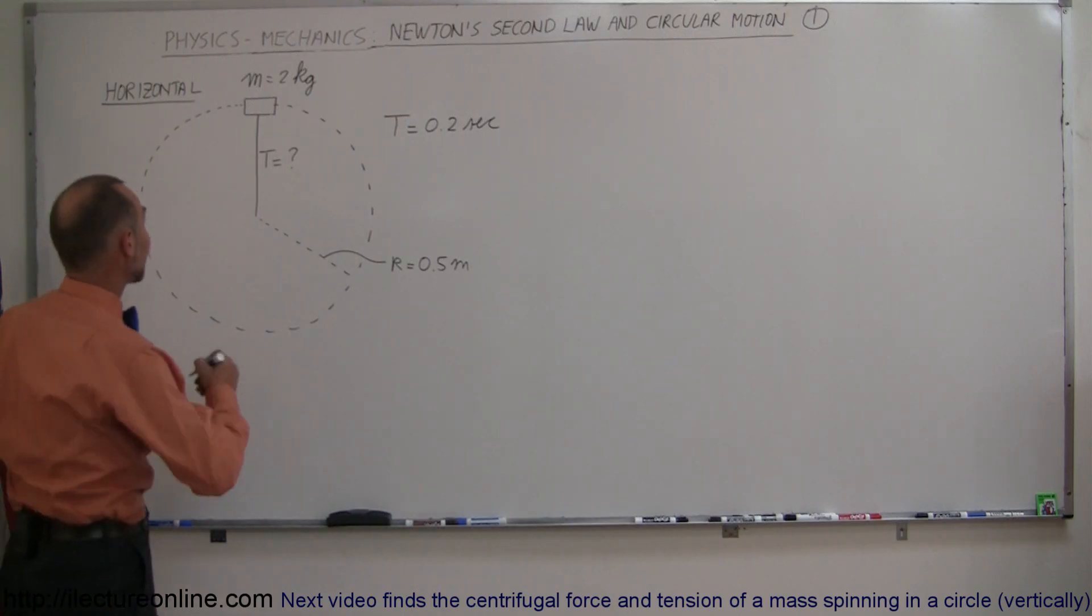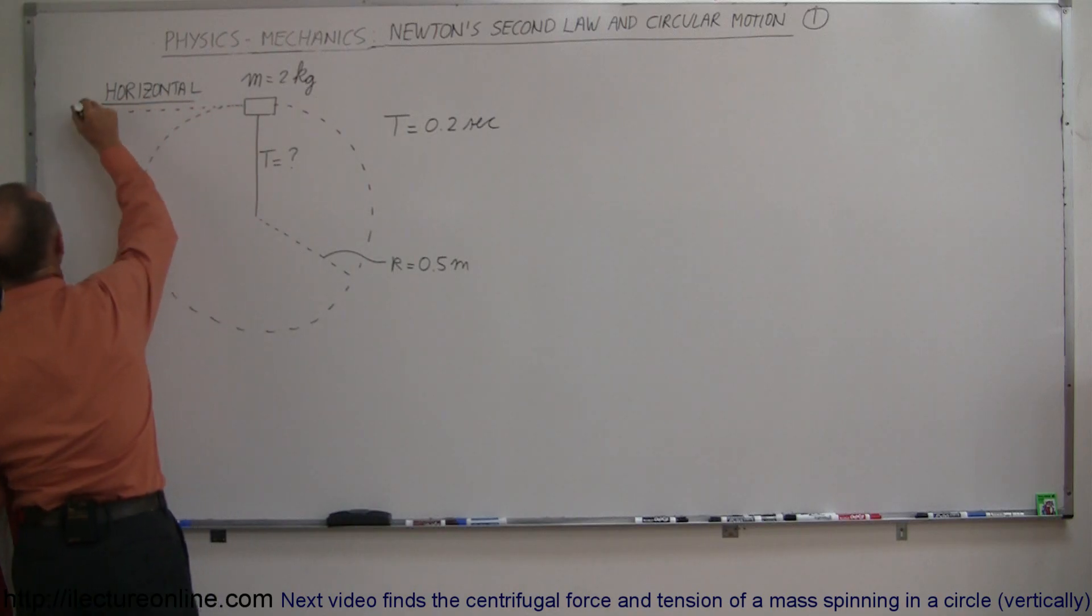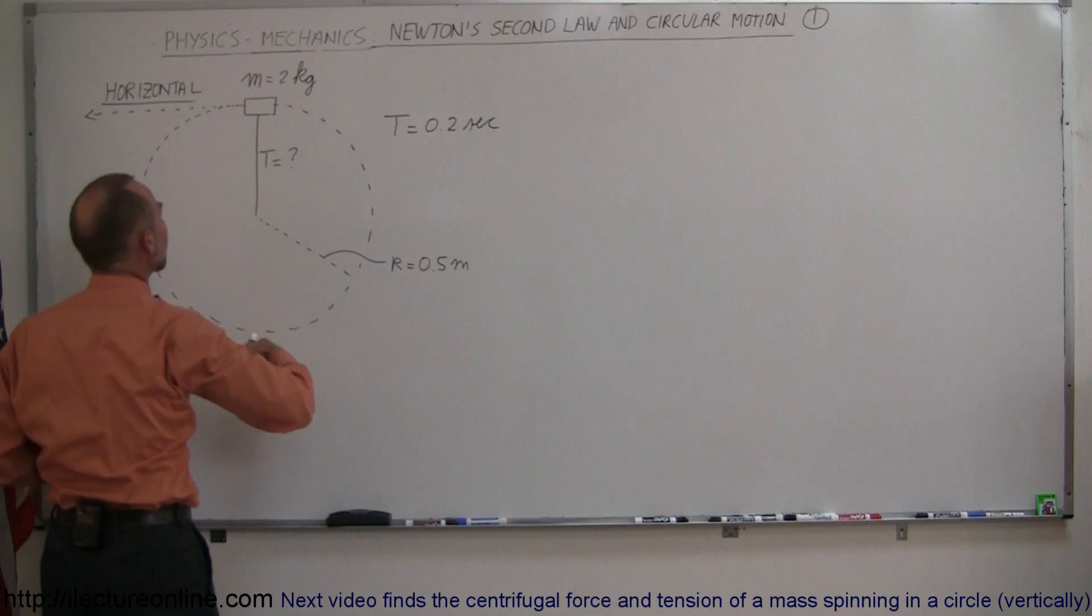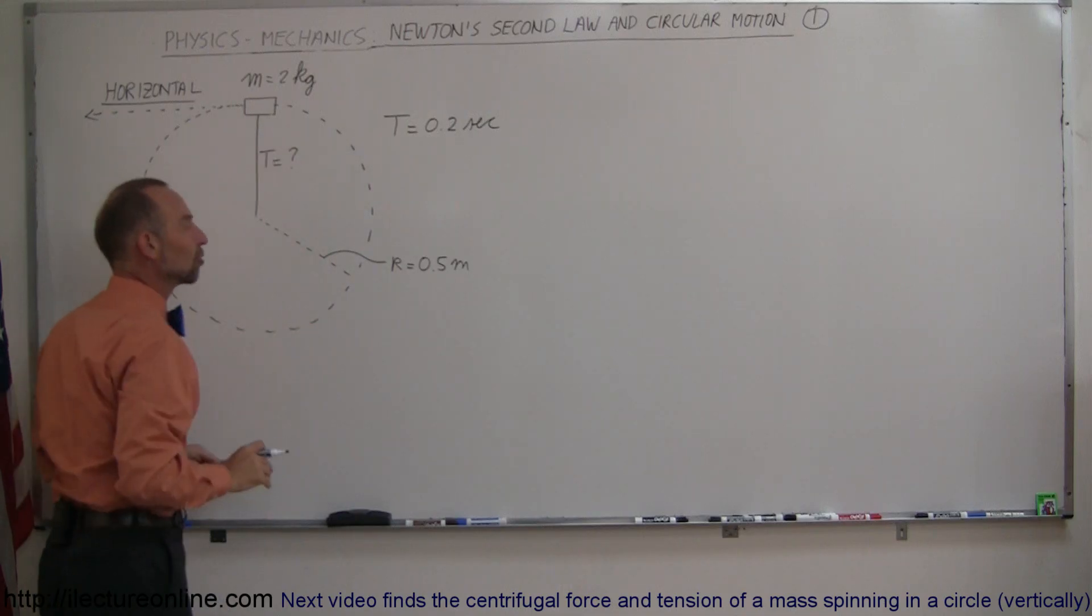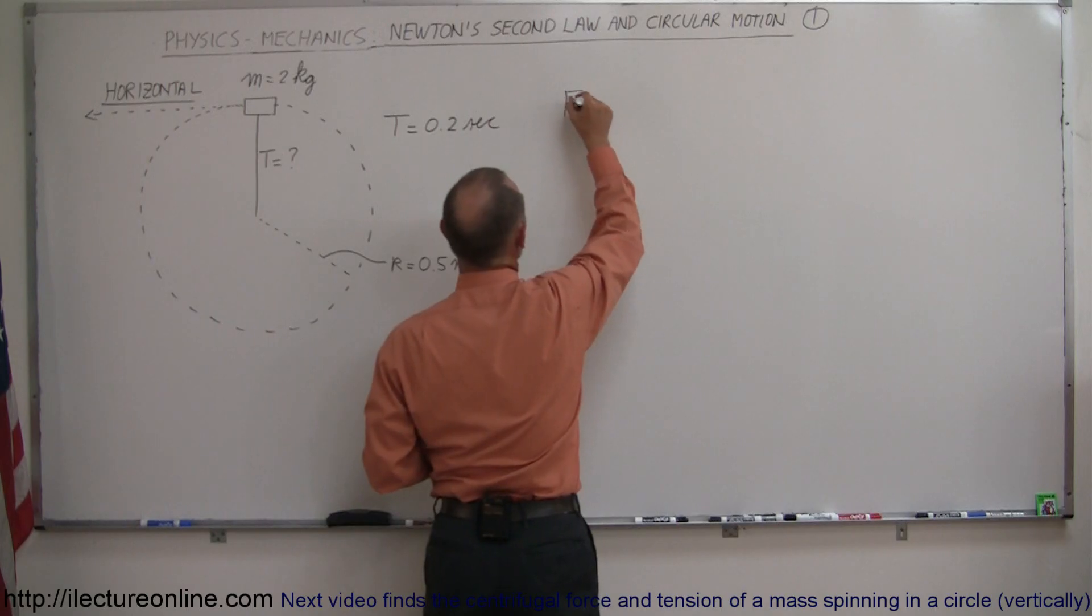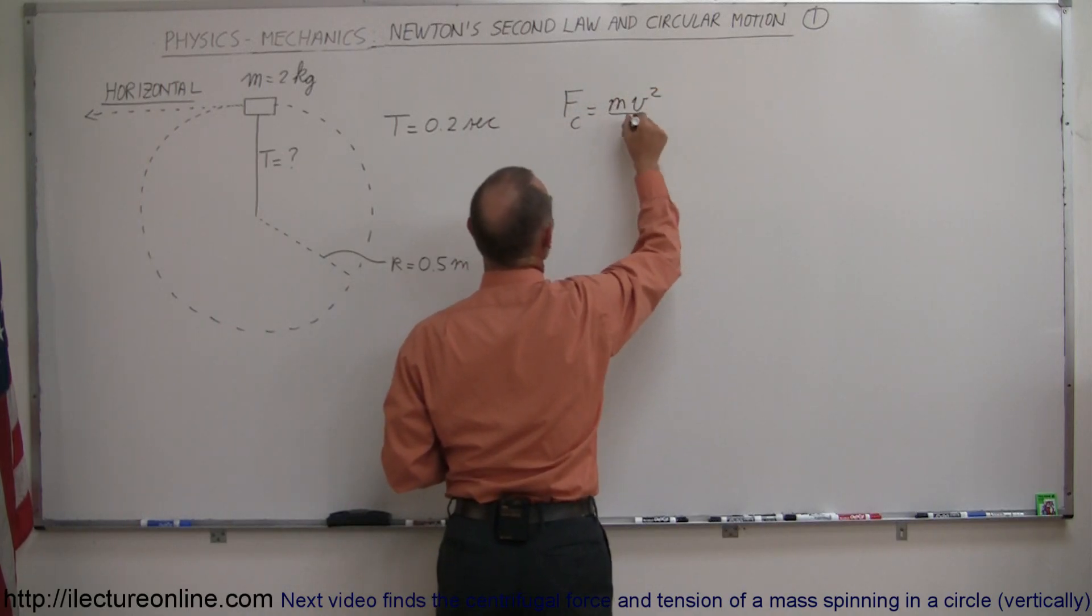And remember, Newton's First Law says that if there's nothing there to keep it from going straight, what it normally would like to do, you need some sort of force to change its direction, and that would then be called the centripetal force. And the centripetal force can be found by saying it's the mass times the velocity squared divided by the radius.